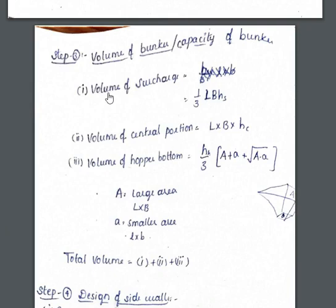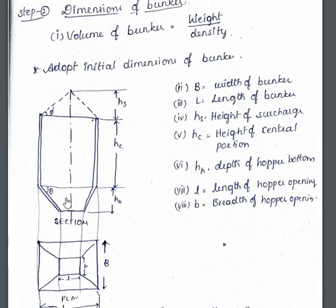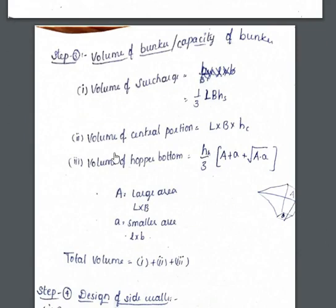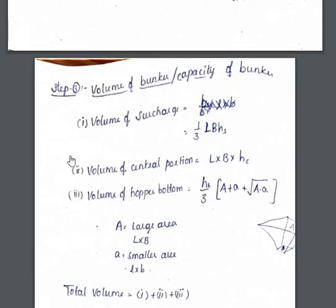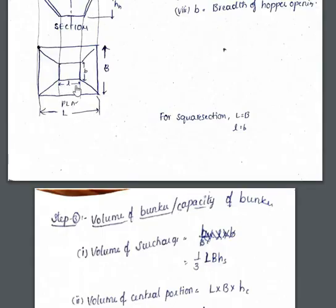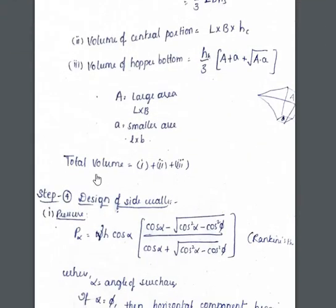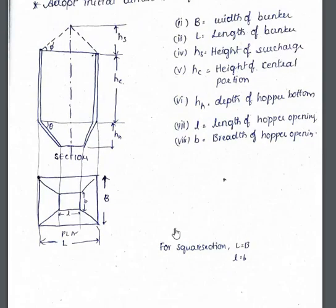We then calculate the volume of each part of the bunker from the diagram: volume of the surcharge, volume of the central portion, and volume of the hopper bottom. The volume of the hopper bottom is given by (h/3) × (A + a + √(A × a)), where capital A represents the large area (length × breadth) and small a represents the smaller area. Total volume is the sum of all three parts.